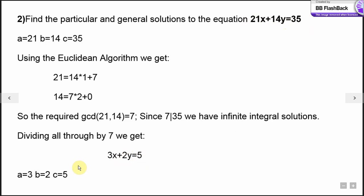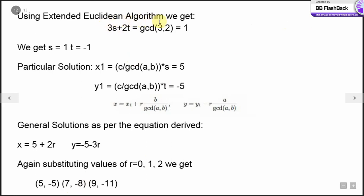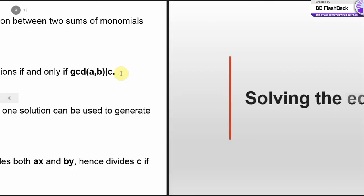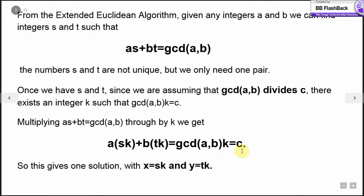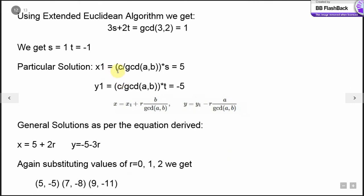In the new equation, we have a equals 3, b equals 2 and c equals 5. Using the extended Euclidean algorithm, we have 3s plus 2t equals gcd of 3, 2, which is 1. Solving this, we get s equals 1 and t equals minus 1. As I said, the k value is c divided by gcd of a, b. So using that here, x1 is c divided by gcd of a, b into s, which gives me 5. y1 is c divided by gcd of a, b into t, which gives me minus 5.